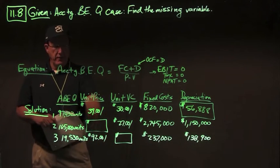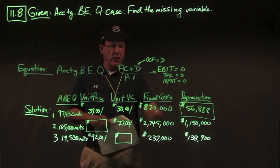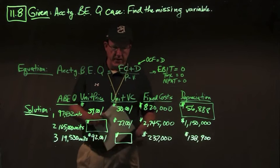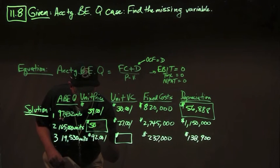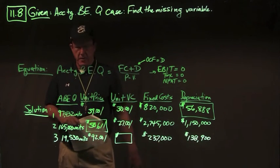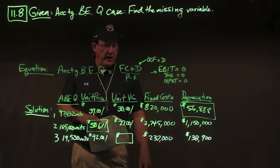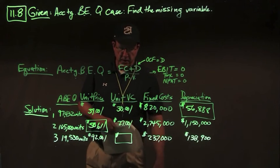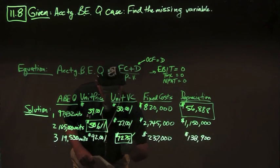Case two: we're solving for unit price. Plugging in 195,344 units equals ($344,000 plus $1,150 depreciation) over (X minus $27 variable cost), giving unit price of $50.61. Case three: solving for unit variable cost. Plugging in 19,530 units, fixed cost $237,000, depreciation $138,900 over ($92 minus X), solving gives variable cost of $72.75 per unit. There are your answers to problem 11.8.